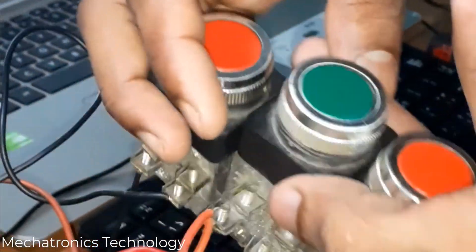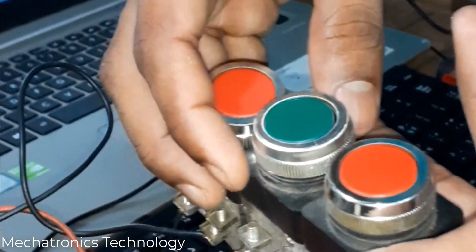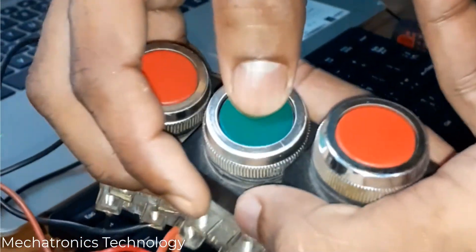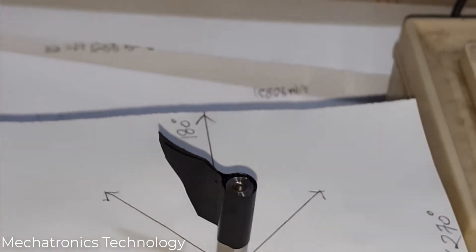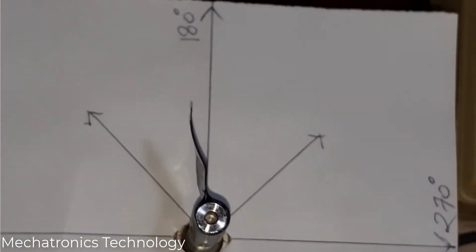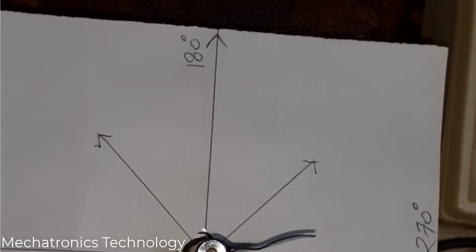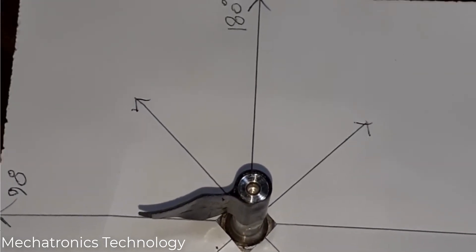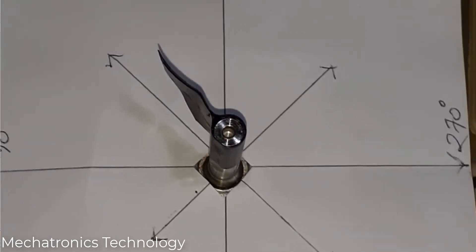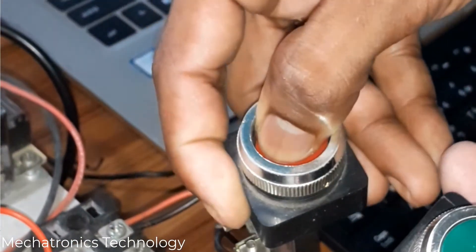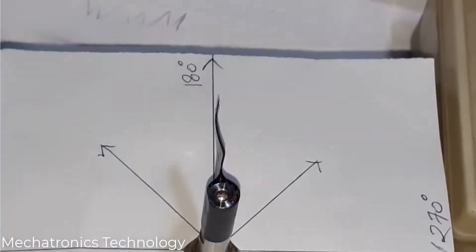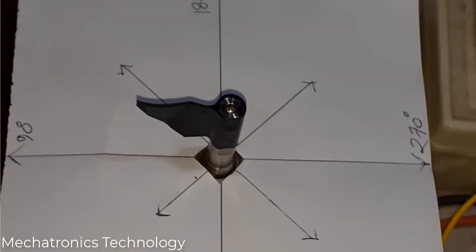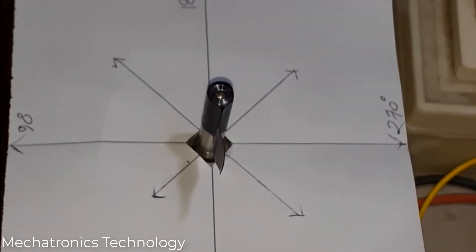Now we'll see how this system works. I press the start button — the motor starts and rotates step by step. We set the step angle to 90 degrees.